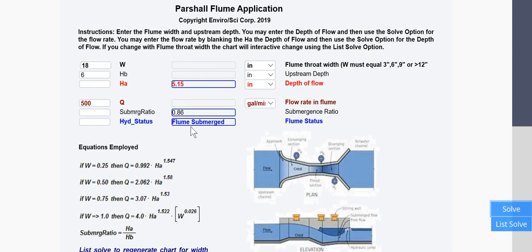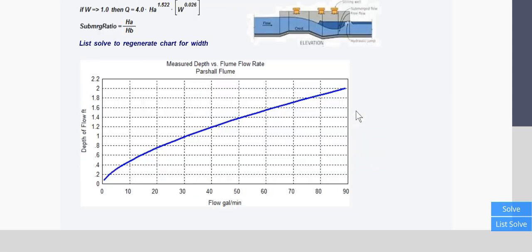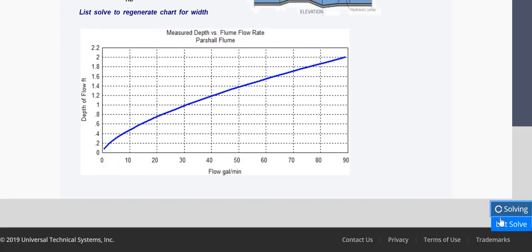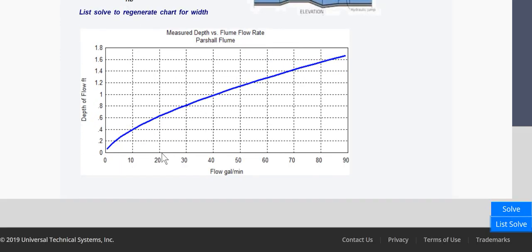We can change this. Let's change this to a 12 inch flume. Here you'll have to solve it and then you can list solve it and you'll see that the chart has changed.